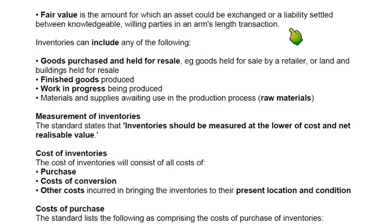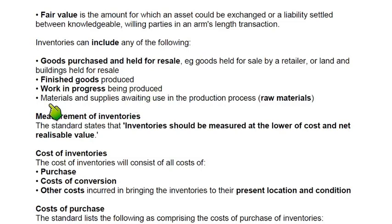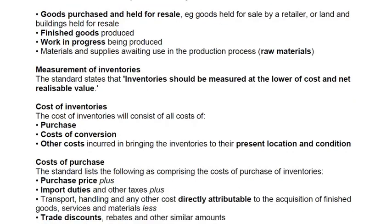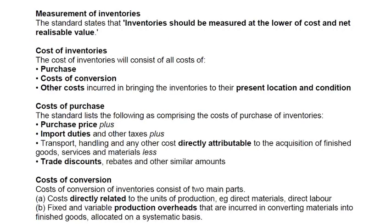IAS again defines what counts as inventory: goods purchased for resale, finished goods produced in our factory, incomplete goods in the process of being produced, and raw materials used in production. Now, regarding inventory measurement — this is one of the most important rules of IAS 2: inventory should be measured at the lower of cost and NRV. Closing inventory will be valued at cost or net realizable value — whichever is lower.